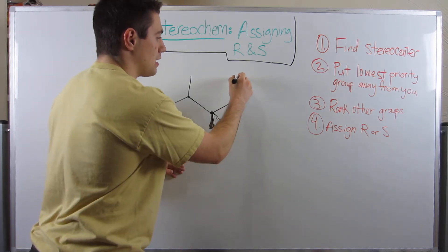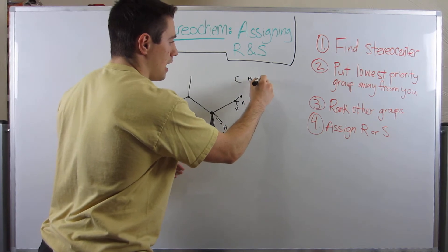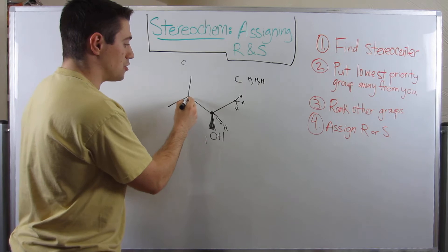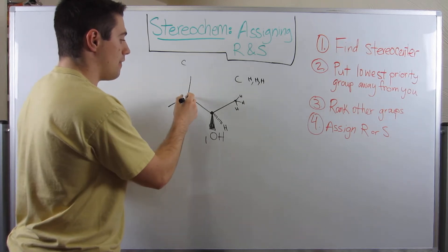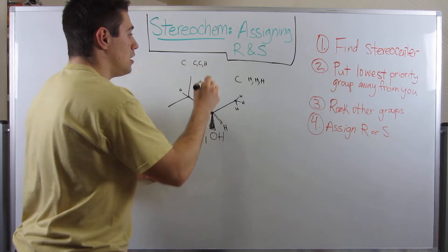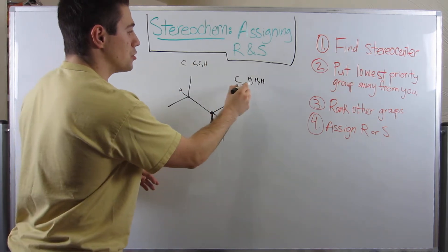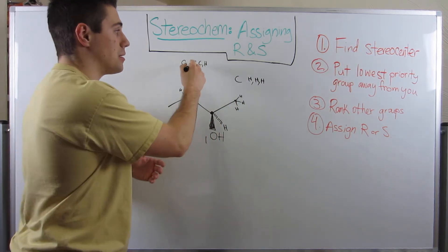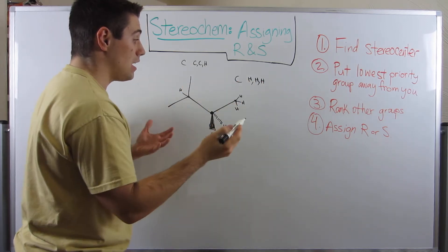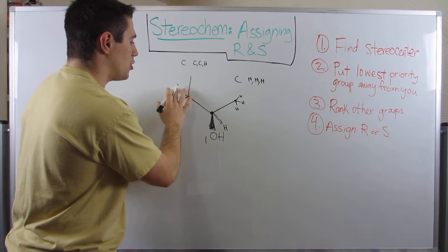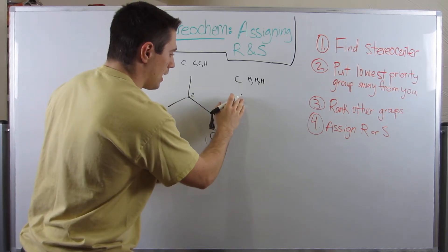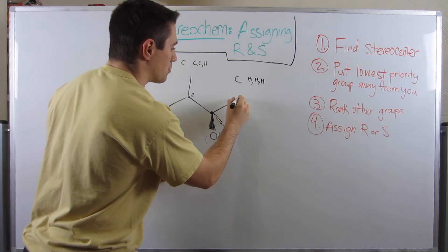So this carbon right here is attached to a hydrogen, a hydrogen, and a hydrogen. This carbon right here is attached to a carbon, a carbon, and then a hydrogen. So C, C, H. You go to the first group. And if you tie, then you keep going. But clearly we can see that this carbon is heavier than that H. So this isopropyl group is second priority.